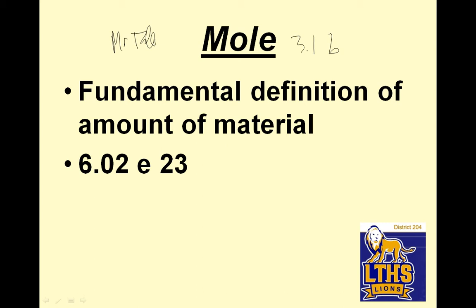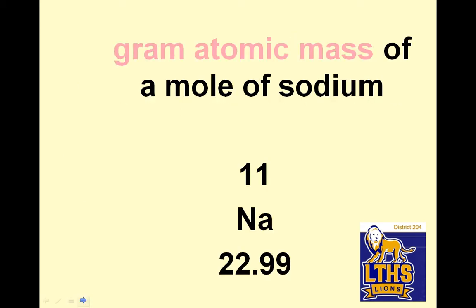A mole is a fundamental definition of the amount of material, so this is how many particles in a mole. This is the grouping we use, kind of like we use a dozen for donuts or a gross for bottle packets. Gram atomic mass of a mole of sodium is, if you look at your periodic table, that would be 22.99. So the periodic table will tell us the atomic masses.